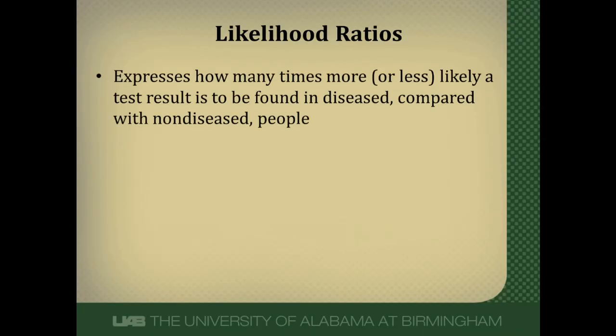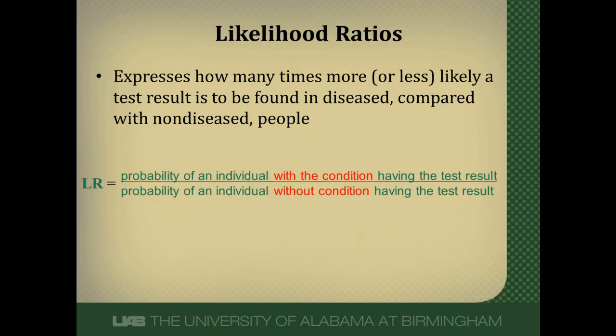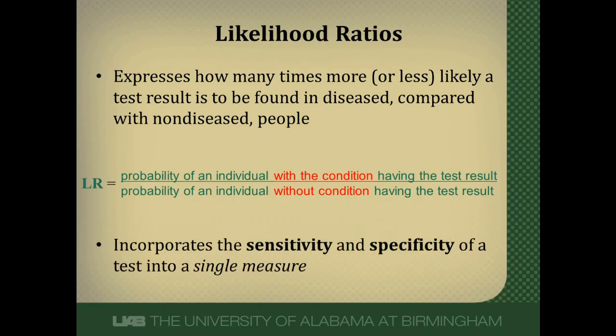Likelihood ratios express how many times more or less likely a test result is to be found in people that are diseased compared to people that are not diseased. The likelihood ratio is a ratio with a numerator and a denominator — it's a ratio of probabilities: the probability an individual with the condition has a given test result divided by the probability of an individual without the condition having that same test result. It's a measure that incorporates both sensitivity and specificity into a single number.